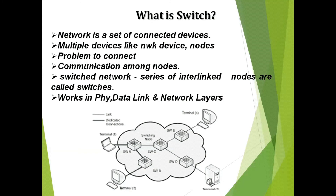Switches work on only the physical, data link, and network layers — the bottom three layers, which are the network-oriented layers. In a network diagram there will be multiple switches interconnected, and every edge device — whether a server, laptop, or computer — connects to the switches, and data communication takes place through them.